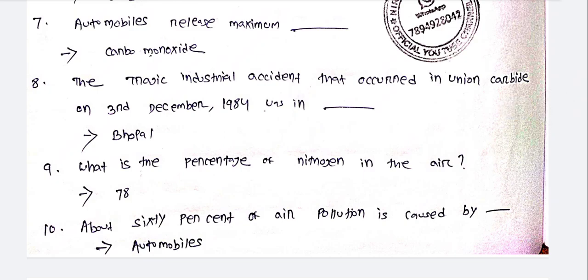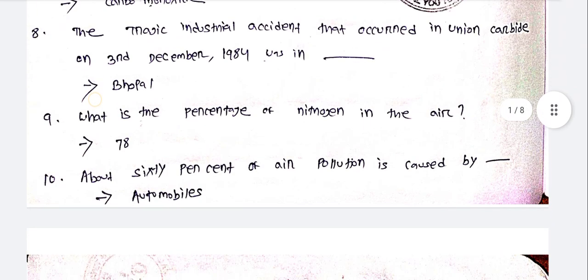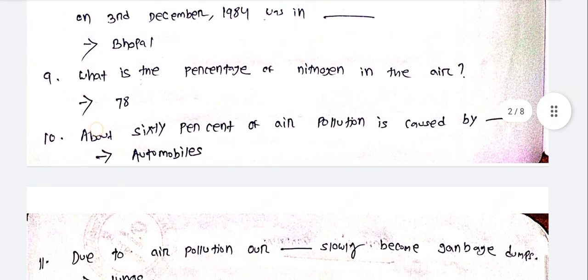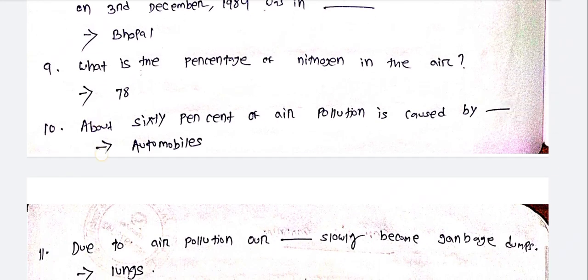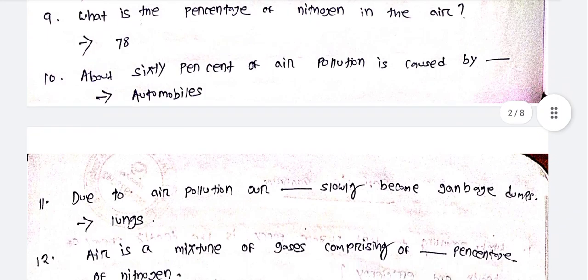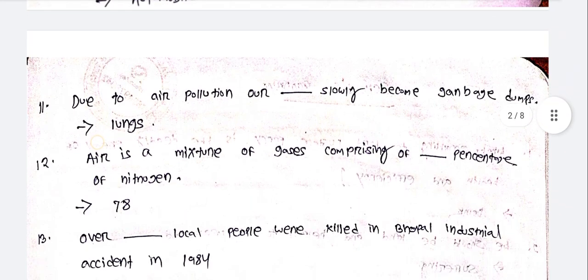The tragic industrial accident that occurred in Union Carbide on 3rd December 1984 was in Bhopal. The percentage of nitrogen in the air is 78%. About 60% of air pollution is caused by automobiles.